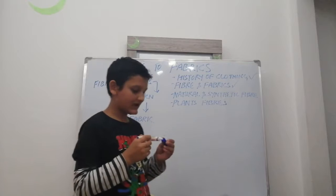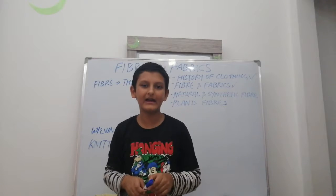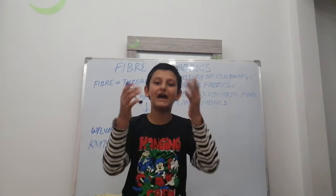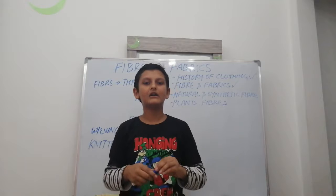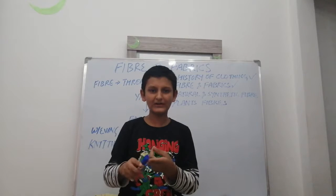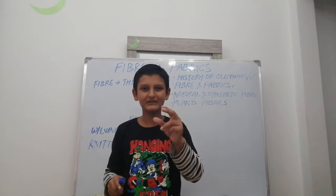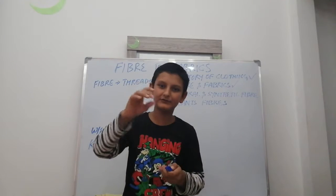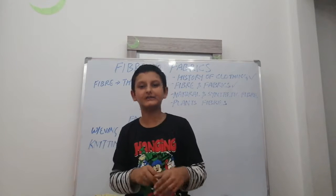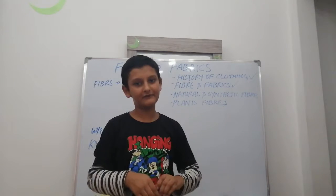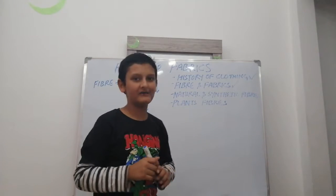Next topic: natural and synthetic fibers. Natural fibers are those obtained from animals or plants. Synthetic fibers are those made from materials like plastic — plastic bottles or cans are crushed in factories to form thin strands, which are then woven or knitted into fabric that we wear.